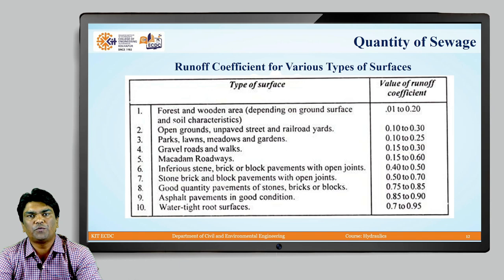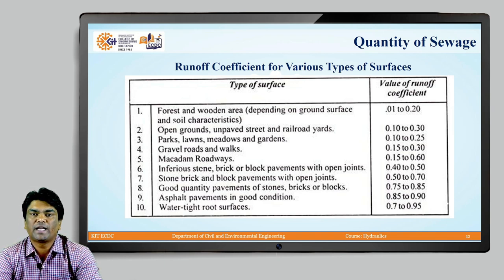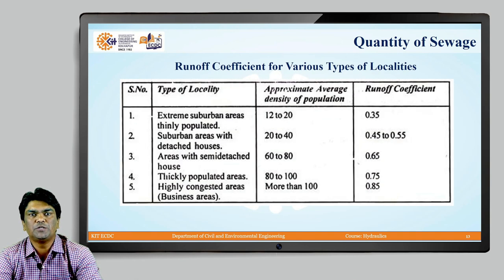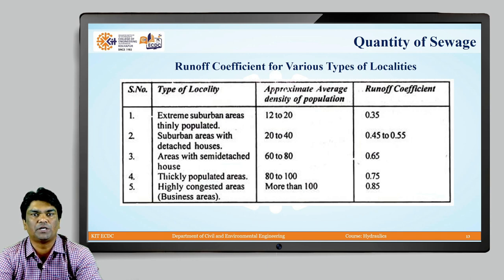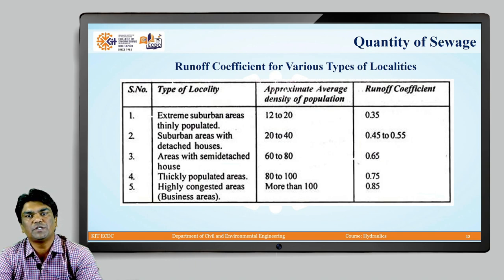This table shows runoff coefficients for various types of surfaces. For forest and wooded areas, the runoff coefficient is 0.01 to 0.20; for open grounds, unpaved streets and railroad yards, it is 0.1 to 0.3. Another table gives runoff coefficients for various types of localities, with approximate average population density. For example, extreme suburban areas thinly populated (density 12 to 20) have a runoff coefficient of 0.35; suburban areas with detached houses (density 20 to 40) have a coefficient of 0.45 to 0.55.